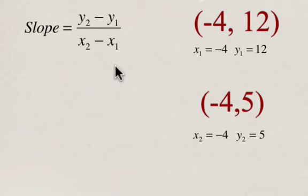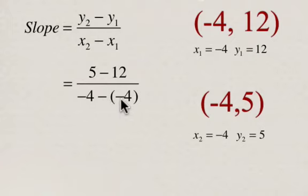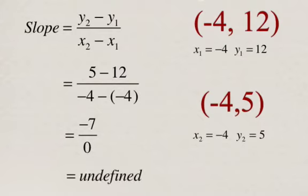Now when we sub that into our formula, we get 5 minus 12 over negative 4, take away negative 4. Remember that negative 4 minus negative 4 is negative 4 plus 4. So this is the important one. We end up with negative 7, which is 5 minus 12, over 0. And any time you have 0 as your denominator, that number is what we call undefined.